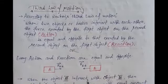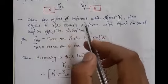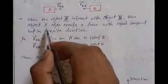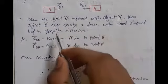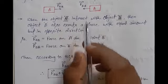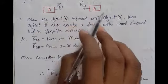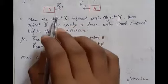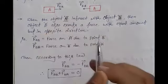For example, when the object A interacts with object B, then the object B also exerts a force with equal amount but in opposite direction. Jitni force hamara object A, object B pe laga raha hai, same utni force but opposite direction me object B first object per exert karega.